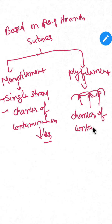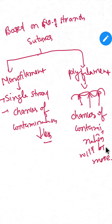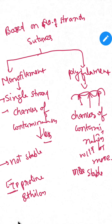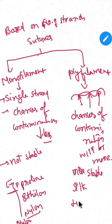Monofilaments are not as stable, whereas polyfilaments are more stable. Examples for monofilament are prolene, ethylon, and nylon. For polyfilament the examples are silk, linen, and polyglycolic acid or Dexon. These are the examples of polyfilament sutures.